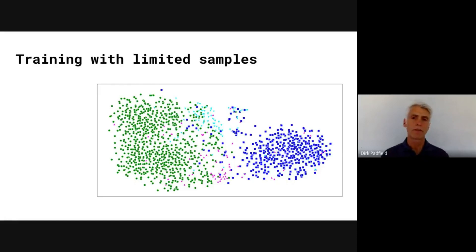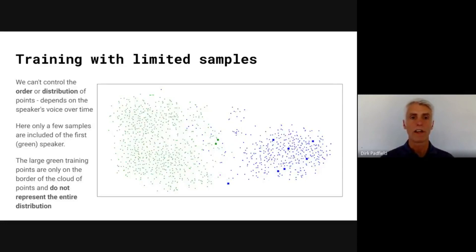Training with limited samples can be quite challenging. In this case, we see a set of points that are embedding vectors from two different speakers, the green speaker and the blue speaker, and we can see that both have a pretty nice distribution. The trouble is that we don't know when each of those points arrive. If we look at the first few points that come from the blue speaker and the green speaker, we see that the green speaker is very limited in terms of the number of vectors that come in, and also they're all on one side of this big cloud so they don't represent the distribution of the speaker's voice.